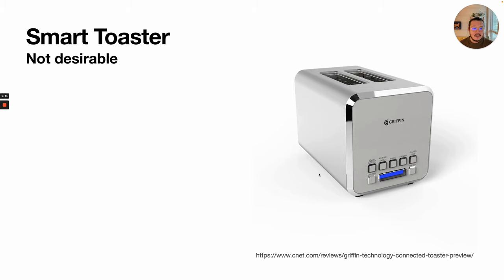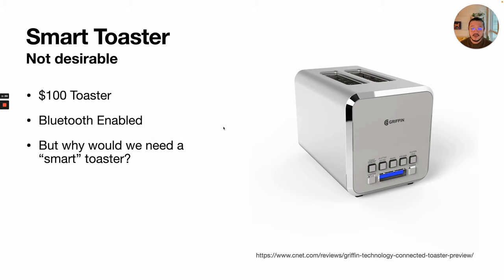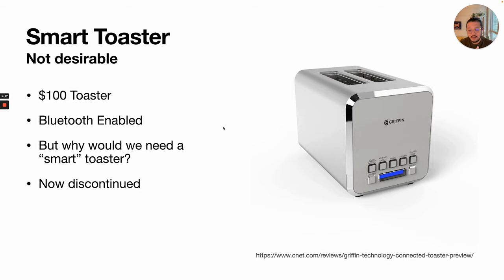Here's a smart toaster made by Griffin — a $100 toaster that is Bluetooth enabled and connects to your phone. There's a real question of why we would ever need a smart toaster, because in most cases the toaster interface is already pretty optimal: you press a button down, the bread goes in, you have a knob that sets how toasty you want it, and that's really it. This is a very obvious case of disconnect between the design and what people really want and need, and this is now a discontinued product because no one bought it.